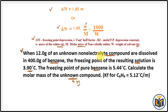When a non-electrolyte solute is added to a solvent, the freezing point of the pure solvent decreases. That is why the freezing point of the solution is less than the freezing point of the benzene. From this data we can calculate the freezing point depression, Delta TF.